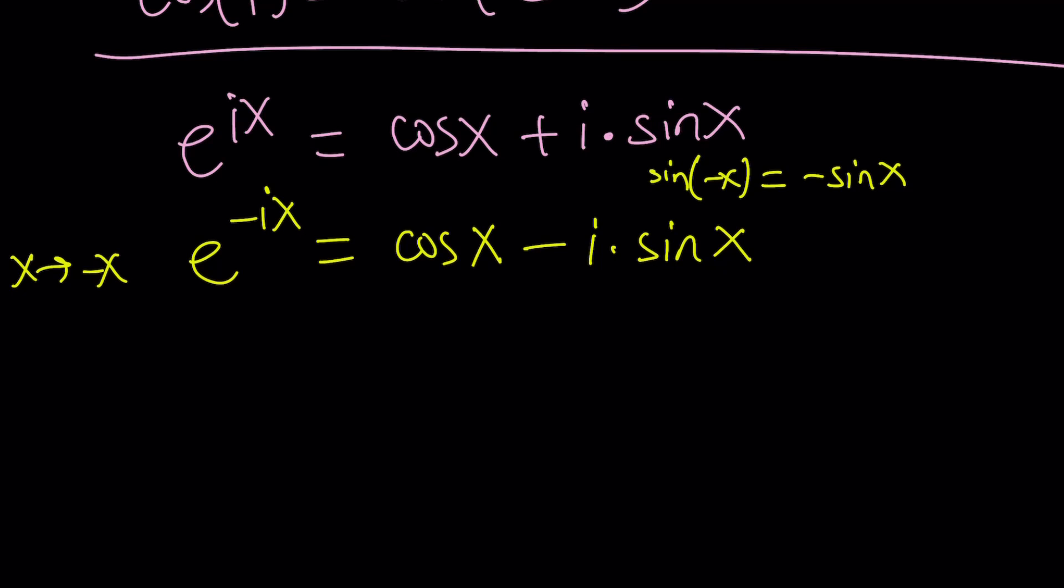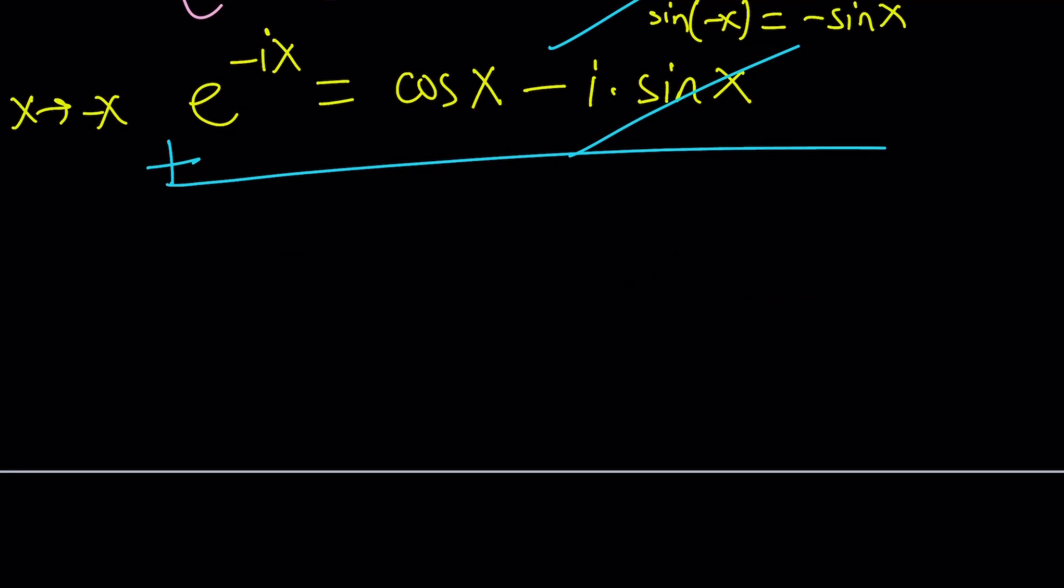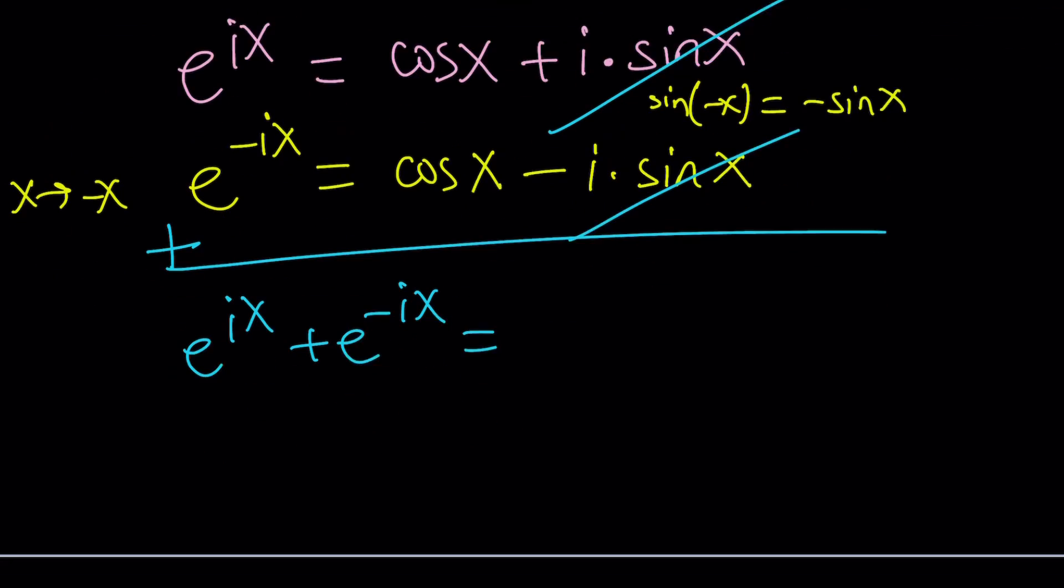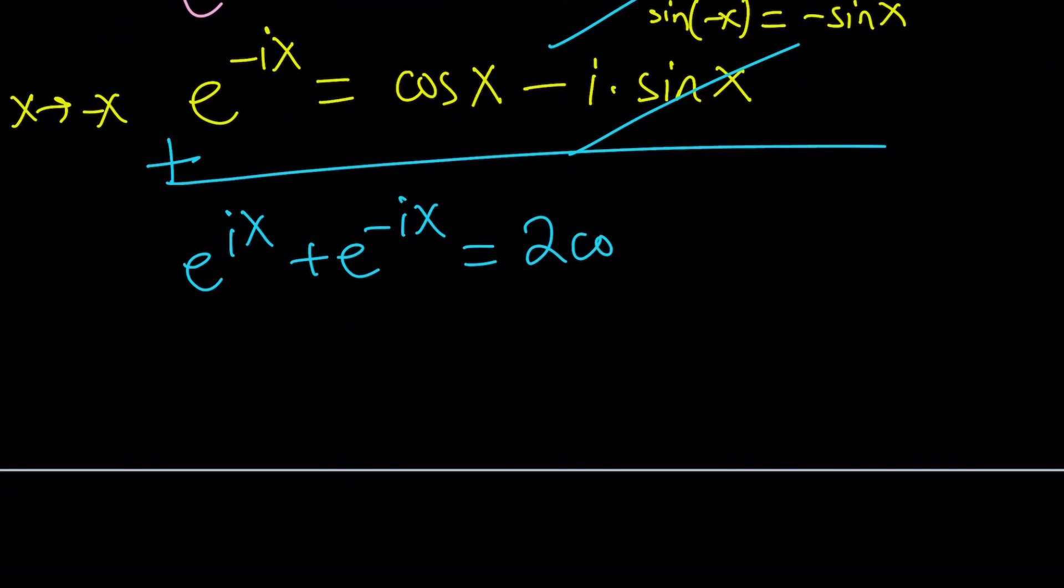I hope it does. Because let's go ahead and add these equations up. When we do, i sine x cancels out. And then we get the following. e to the power ix. Plus e to the power negative ix. Equals cosine x plus cosine x. Which is 2 cosine x. And since I'm trying to solve for cosine x. I get e to the power ix. Plus e to the power negative ix. Divided by 2. So that's pretty interesting.